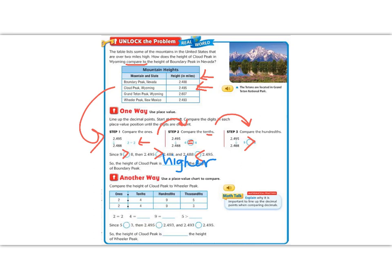Another way to do this is to draw a place value chart to compare. In this example, we're going to compare Cloud Peak again, but now we're going to compare it to Wheeler Peak. So Cloud Peak was 2.495, but Wheeler Peak is 2.493.